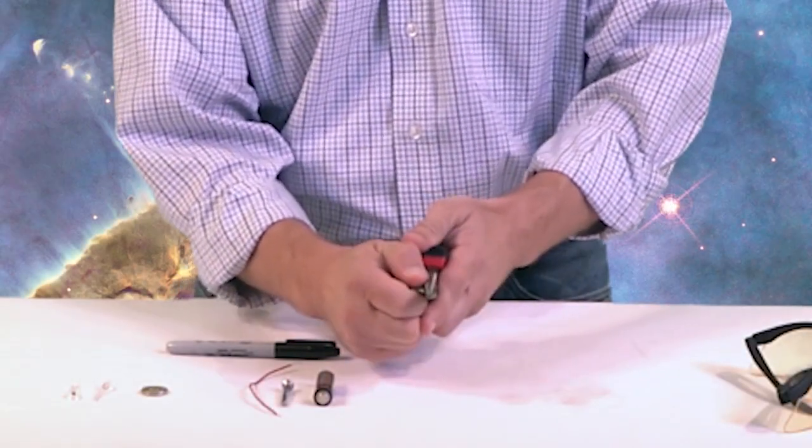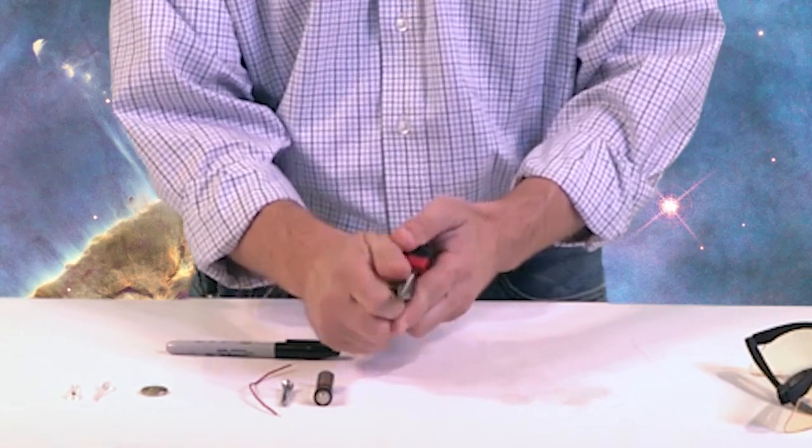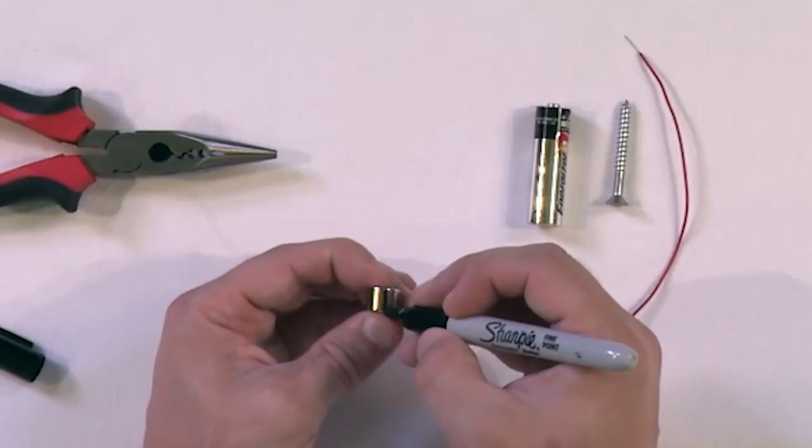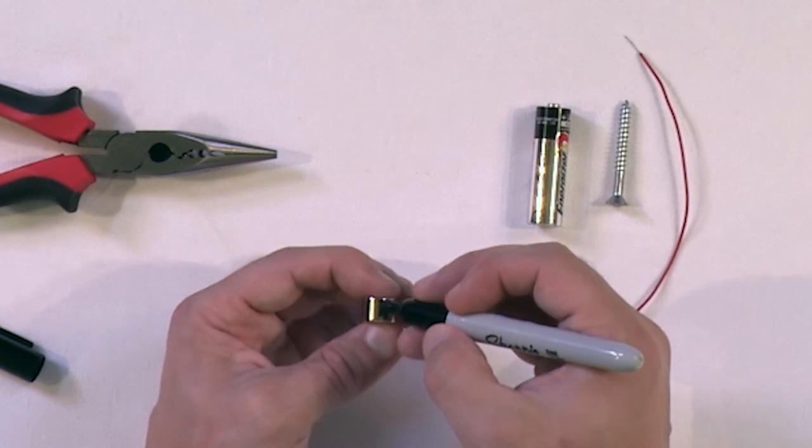Very difficult. I'm actually squeezing it very hard, and I can't get it off of these pliers. I'll put some black lines on the magnet just so we can see it spinning a little bit easier.